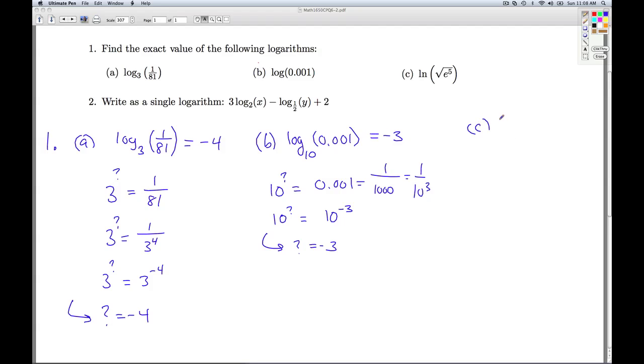And finally, in Part C, we've got the natural log of the square root of e to the fifth. And so we're asking a question. The base of the natural log is this base e. It's that funny, irrational number. We'll talk about more in Section 6-5. So this is asking us e to what power is the square root of e to the fifth?